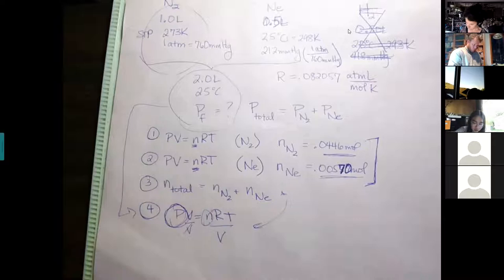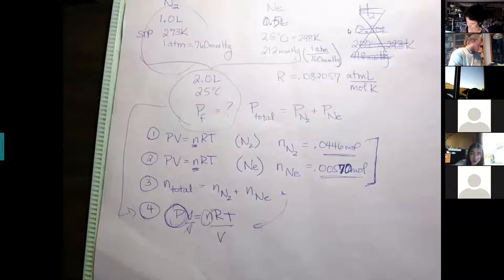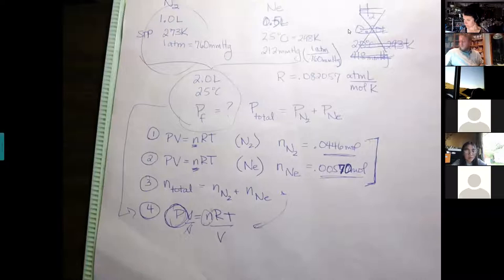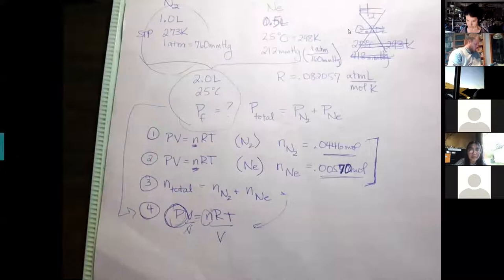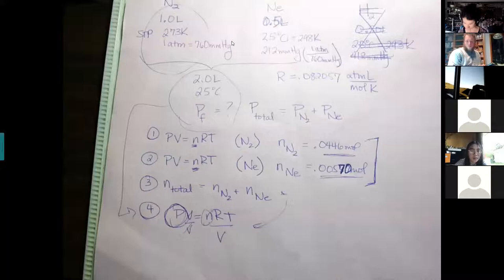A student gets 0.0455 for nitrogen. Walking through it: at STP, pressure is 1 ATM and volume is 1 liter, so you divide by R (0.082057) and by 273 Kelvin. The answer is confirmed as good. The N total combines both gas moles, and then we divide by volume to solve for pressure in the final step.